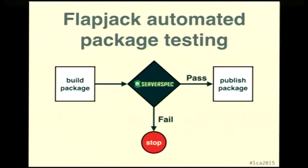We use ServerSpec in Flapjack — a monitoring tool that does notification routing and event processing. In layman's terms, it takes check output from Nagios, Sensu and friends, applies filters, and works out who to notify and how. We're building packages for Debian, Ubuntu and CentOS using Omnibus, and we use ServerSpec to test our packages before they are made available to our human testers. We build the packages, test them with ServerSpec, and assuming all passes, we publish them. For different operating systems, we use Docker — taking a pristine image of each distribution, adding the newly created package, and running ServerSpec on each Docker instance.